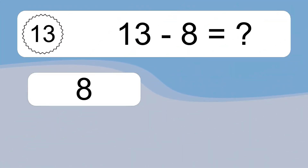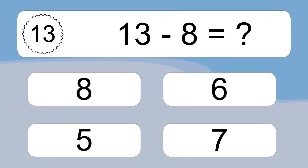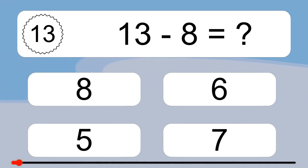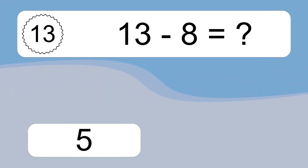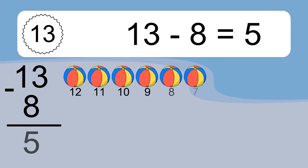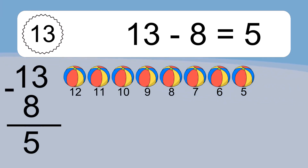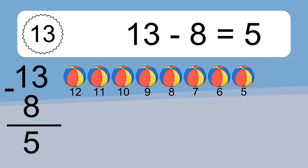13 minus 8 equals what? 13 minus 8 equals 5. Let's count it: 12, 11, 10, 9, 8, 7, 6, 5.